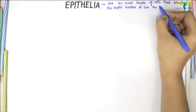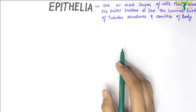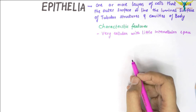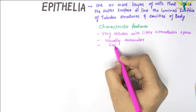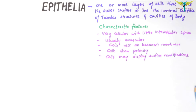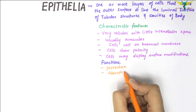Let's learn the characteristics of the epithelial tissue. The epithelial tissue is very cellular with little intercellular space. It is usually avascular. The cells rest on a basement membrane. The cells show polarity and may display surface modifications. The functions of the epithelium include protection, absorption, secretion, and exchange.